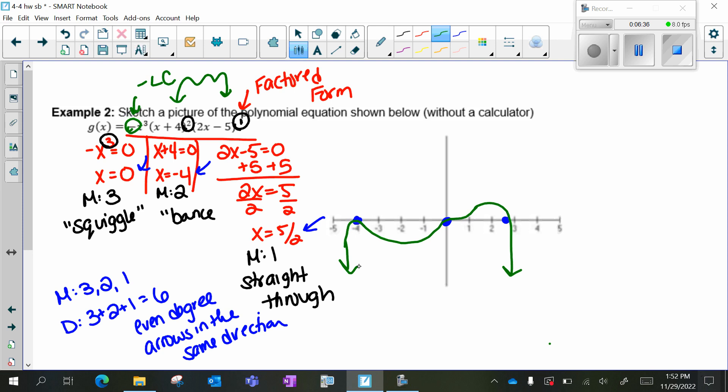I don't know exactly what's happening in between in terms of maximums and minimums, but I do know that both arrows need to point down. I do know that there needs to be a bounce here, a squiggle here, and then it needs to go back straight through at 5/2. So this is a brief review and overview of graphing polynomials. Thank you.